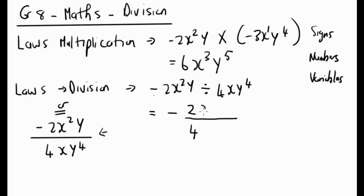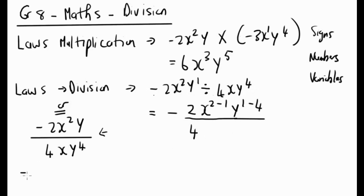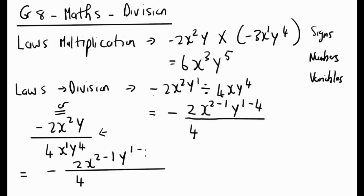With division we subtract the exponents — that's x to the power of 2 minus 1. Remember: multiplication means we add exponents, division means we subtract them. We also have y to the power of 1 on top, so that's 1 minus 4. Writing it as a fraction: negative 2 over 4, then x to the power of 2 minus 1, and y to the power of 1 minus 4.